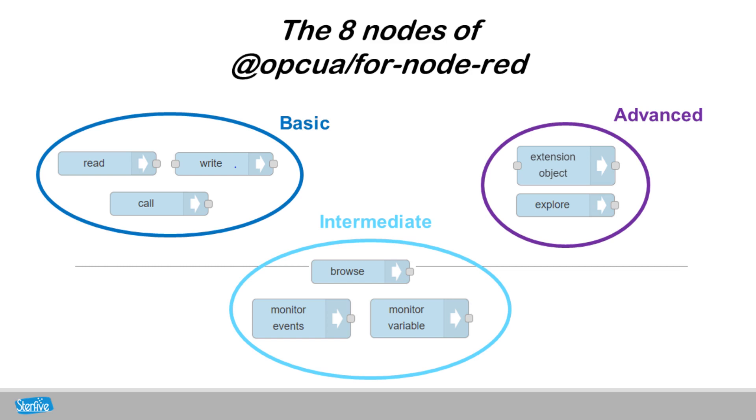OPC UA for Node-RED is composed of eight nodes. In this video, we are going to make a quick overview of each of them. We split the content into three categories, from basic user to advanced.